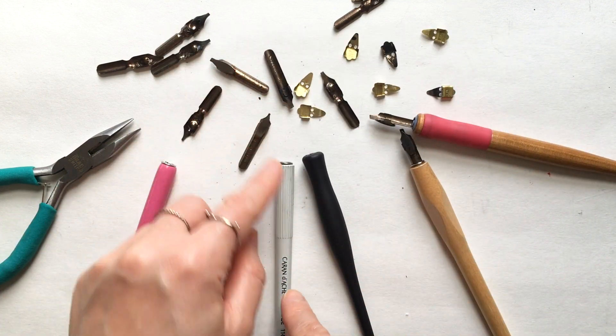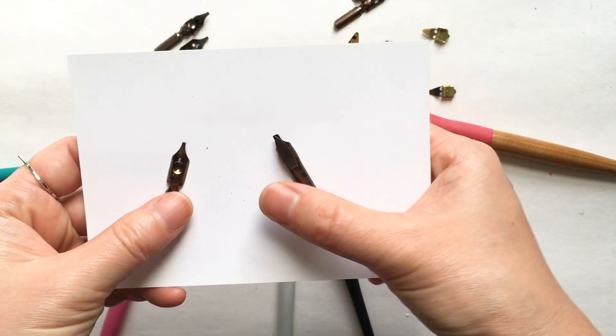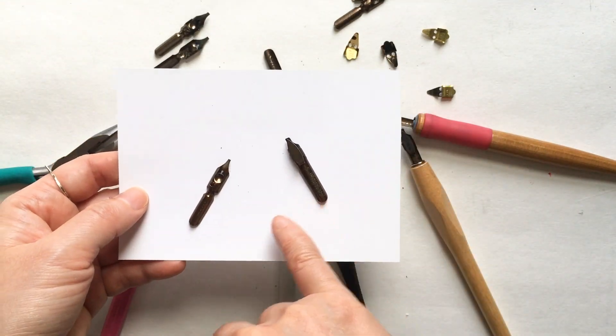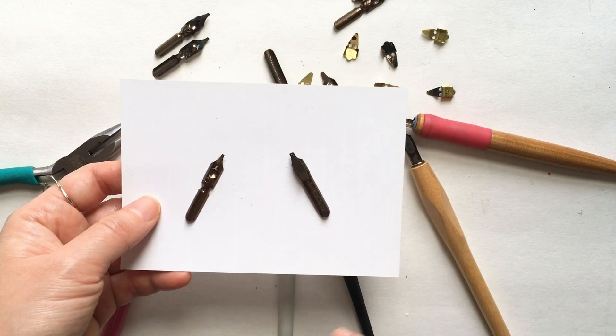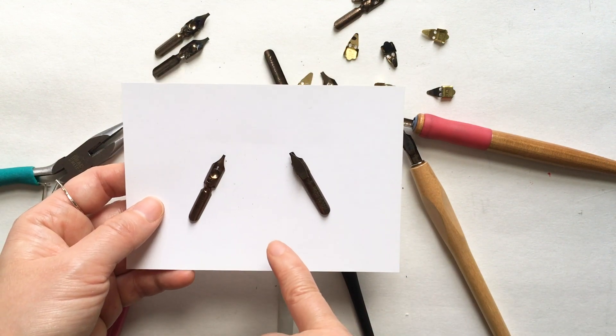With the broad edge calligraphy pens, you buy the nibs and the pen holders separately. I have two brands of calligraphy pen here: this one is from Brause and this one is from Mitchell. These are two very common brands for broad edge nibs. For beginners, I highly recommend Brause. They are very consistent in their quality.